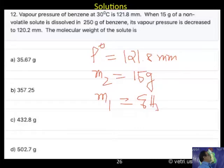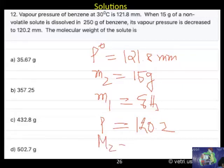Its vapour pressure is decreased. That means, P is given: 120.2 is given. What is asked? Molecular weight M2 is asked.